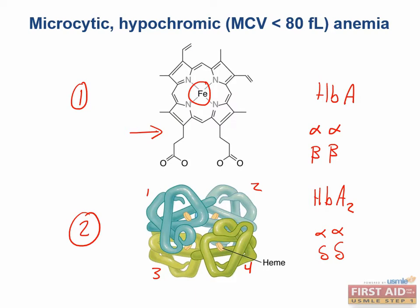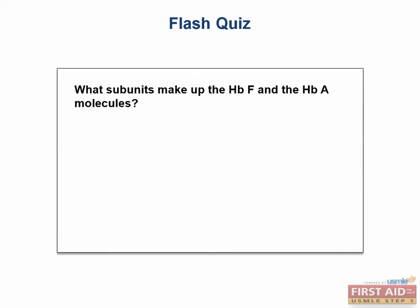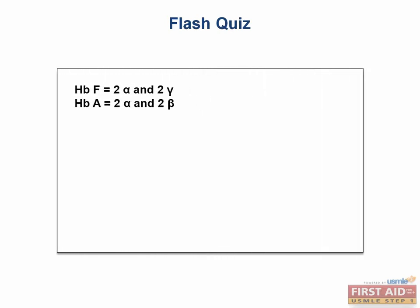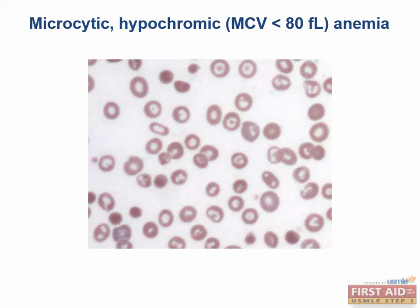Iron deficiency can be caused by losing large amounts of iron through prolonged bleeding — think menorrhagia in women of childbearing age. If given a patient under 50 with melena and iron deficiency anemia, the most common cause is peptic ulcer disease. Melena is a black tarry stool resulting from oxidized blood in the feces, indicating bleeding from somewhere in the upper GI system.